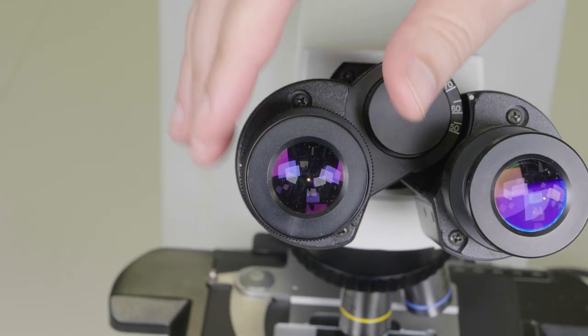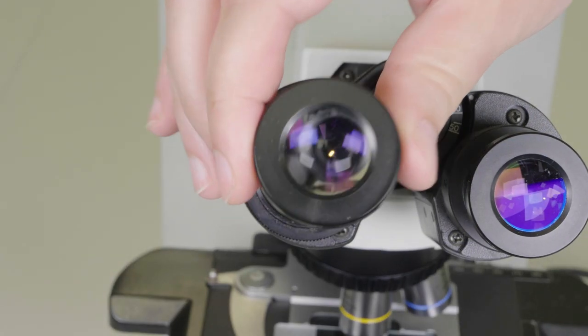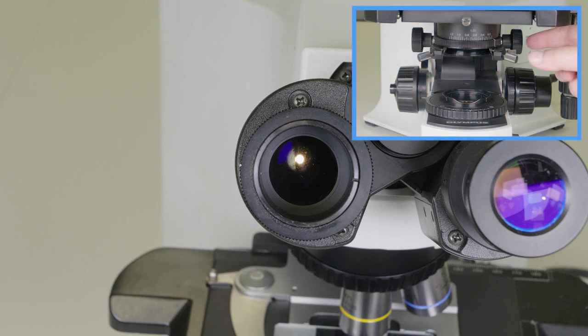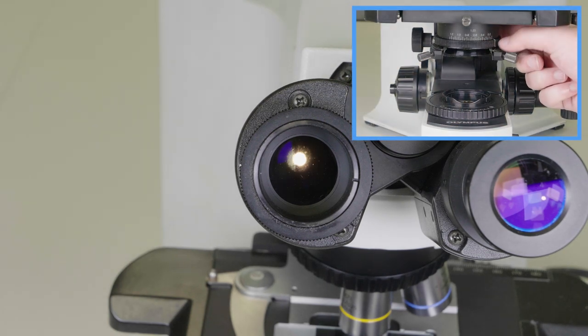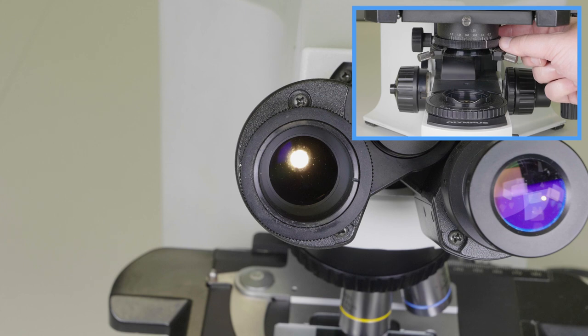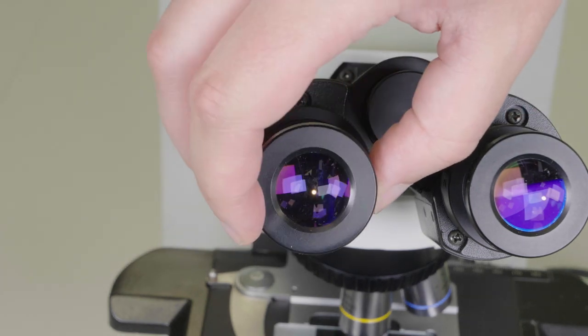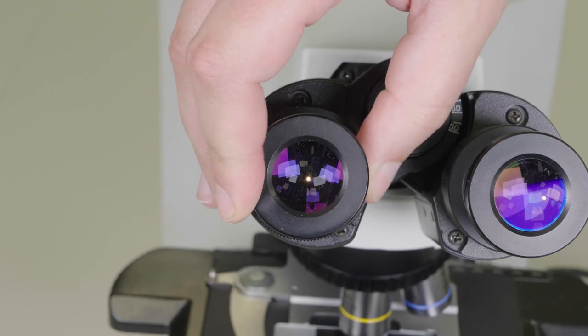Now, we need to adjust the aperture iris so that an appropriate amount of light is let through to the objective lens. Remove an eyepiece and you will see a dot of light. Open the aperture iris to expand this dot of light until it fills approximately 80% of the field. Then replace the eyepiece to conclude the setup process.